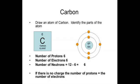That number six represents the number of protons of carbon, because number six is what we call the atomic number — the atomic number of carbon. The atomic number is the number seen on top of the symbol of the element, and that's how the elements are arranged in the periodic table, in order of atomic number.